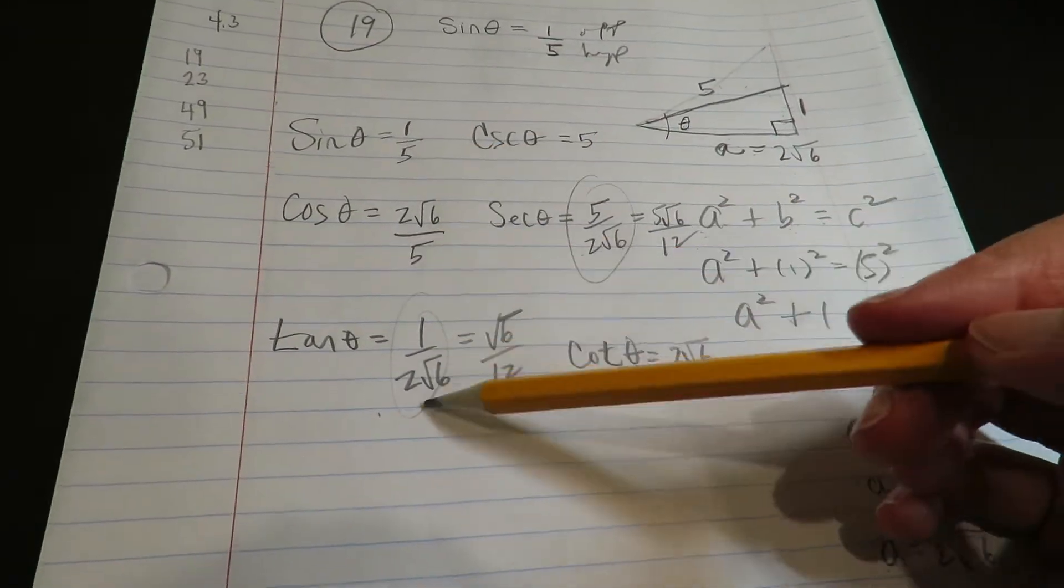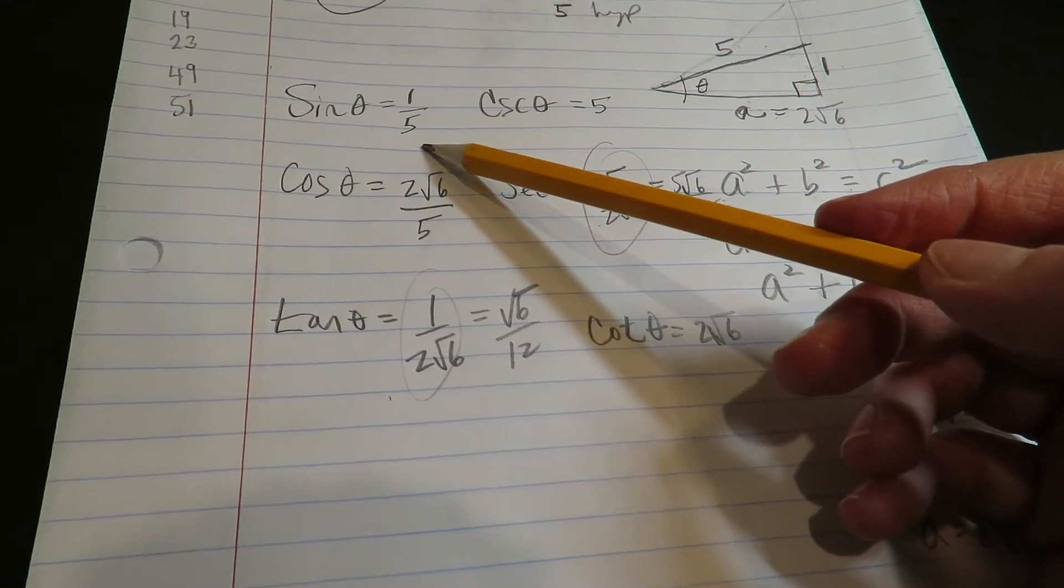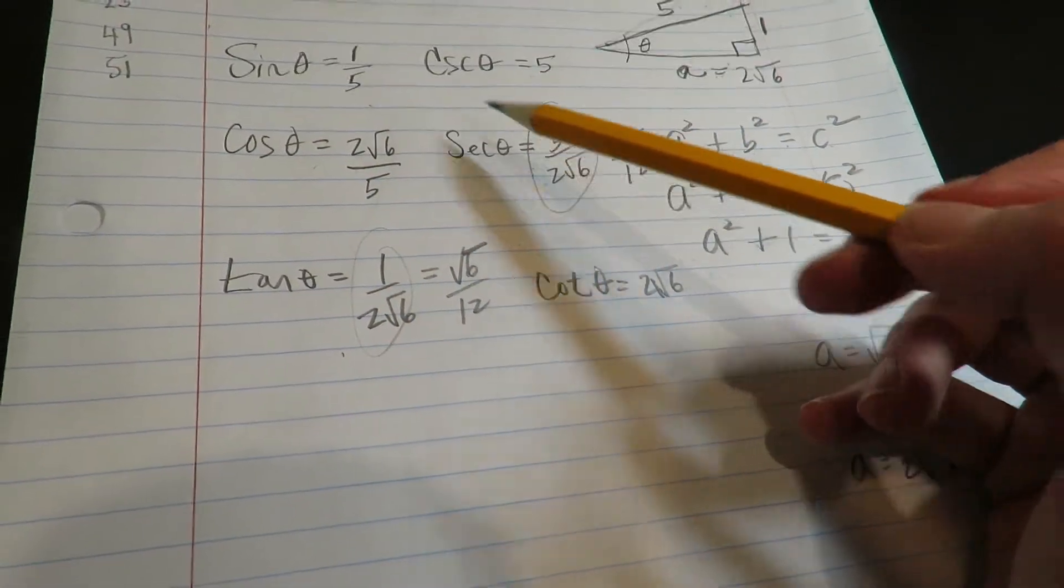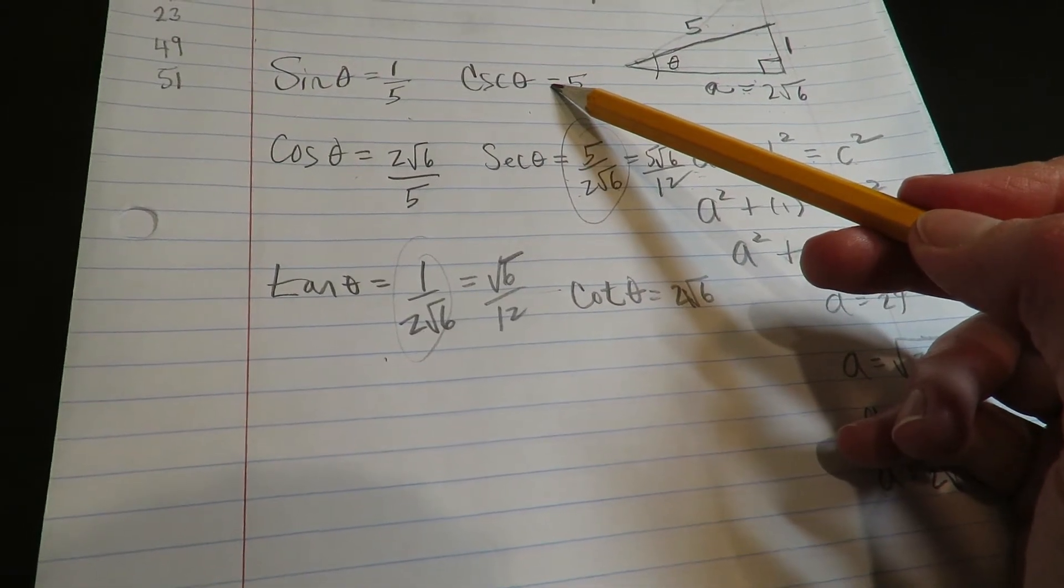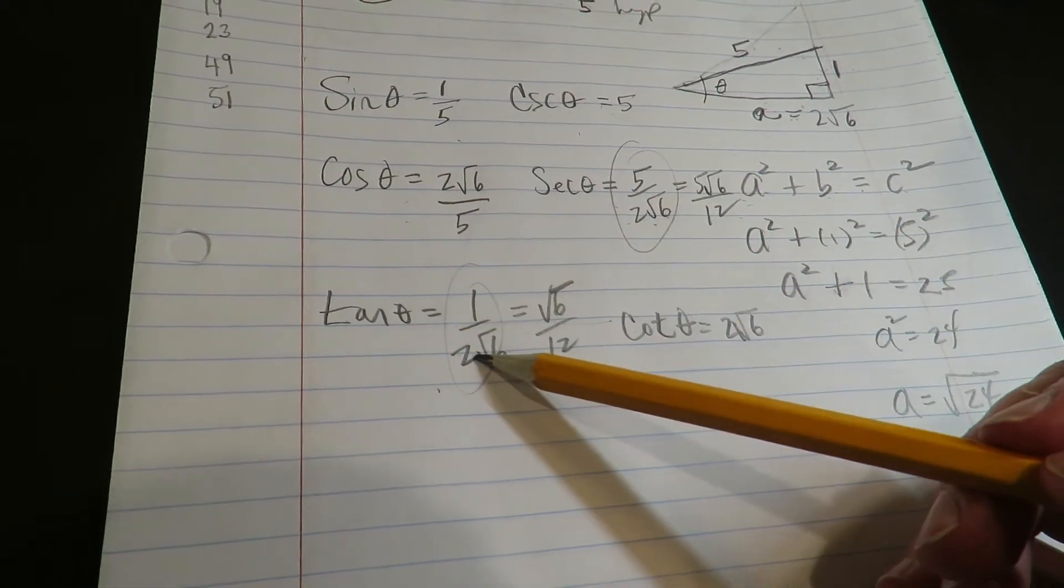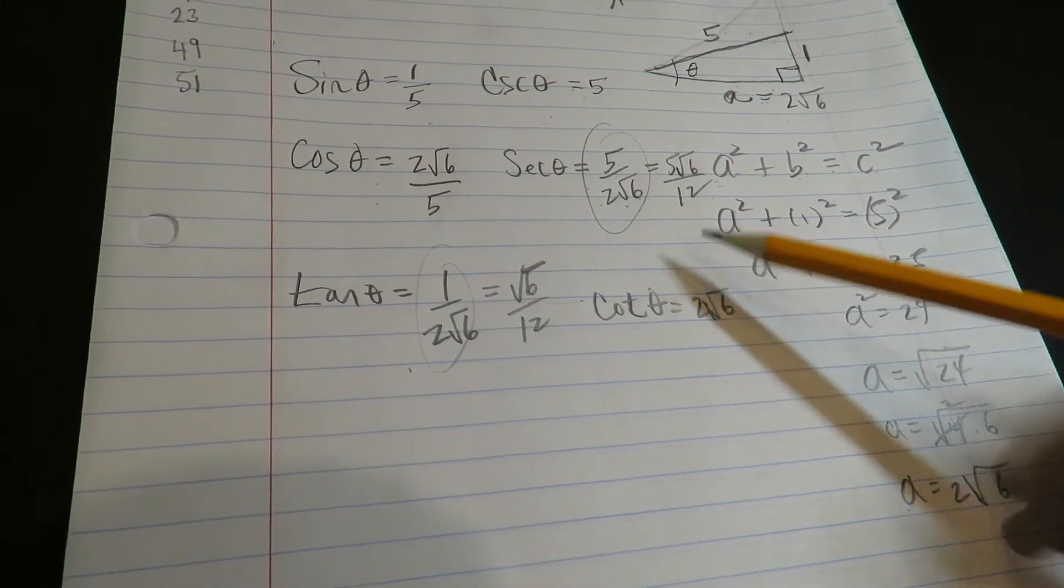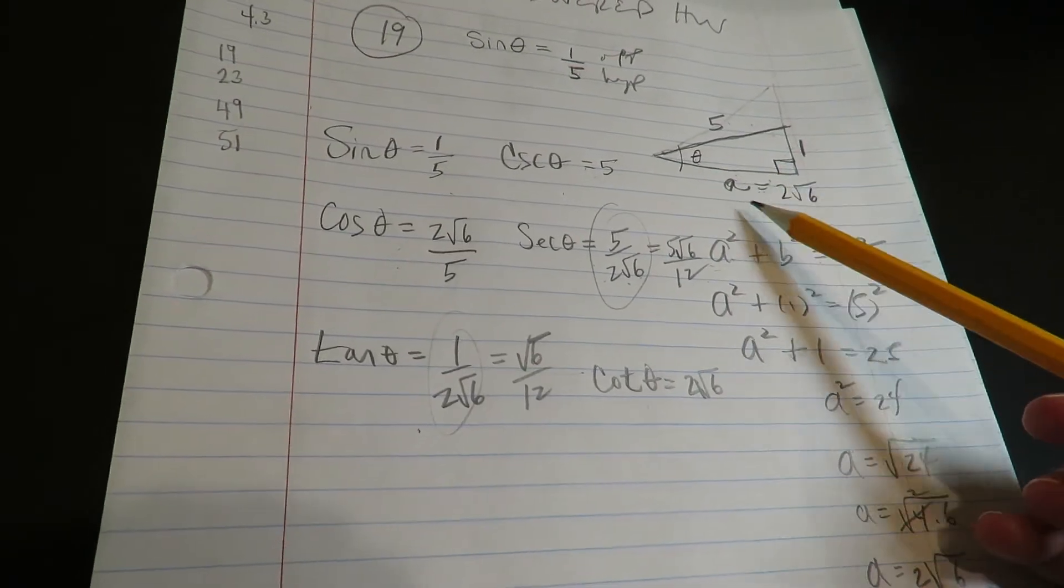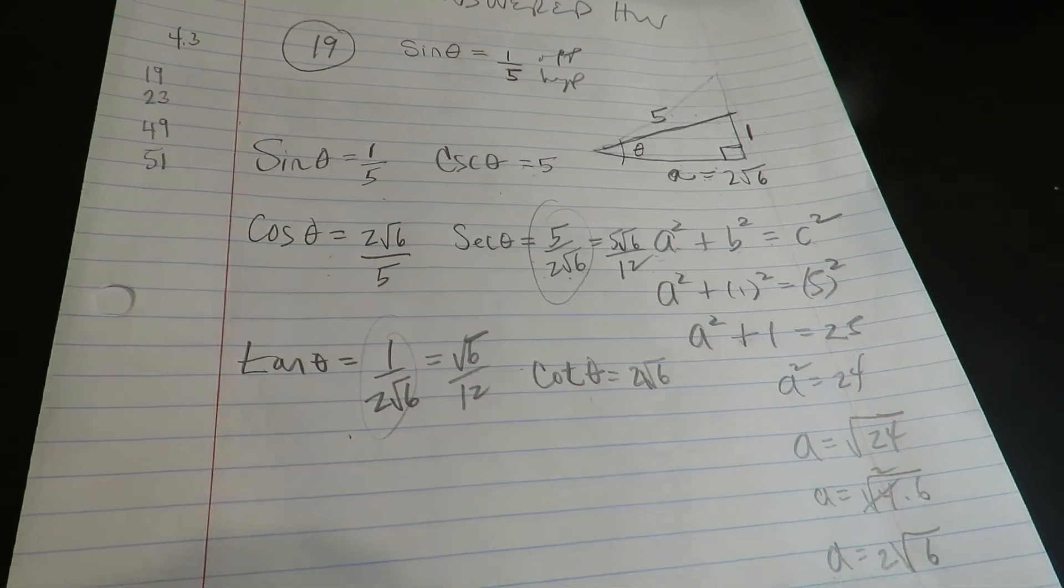Okay, gang, that's it on this one. They just wanted you, once they give you the one trig function, you set up the triangle, you find the missing side, and then you just do the other 5. You have to memorize: cosecant is hypotenuse over opposite, cosine is adjacent over hypotenuse, secant is hypotenuse over adjacent, tangent is opposite over adjacent, cotangent is adjacent over opposite. So you want to know what these are, what parts of the triangle you're pulling out. All right, hope that helped. I'll catch you. Bye-bye.